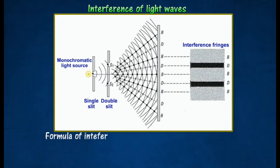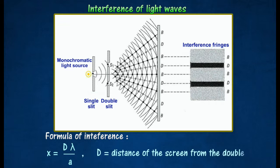The formula of interference is given by X equals D lambda over A, where D is the distance of the screen from the double slit, and A is the separation distance between the double slits.